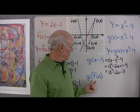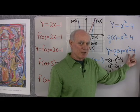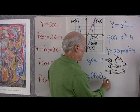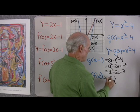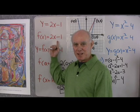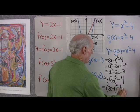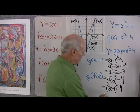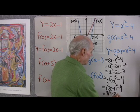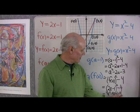How about g of f of x? It makes no difference what's inside the parentheses. Since g of anything is that thing squared minus 4, g of f of x is f of x quantity squared minus 4. Since f of x equals 2x minus 1, I substitute to get (2x minus 1) squared minus 4. Multiplying out: 4x squared minus 4x plus 1 minus 4. Combining constants gives 4x squared minus 4x minus 3.